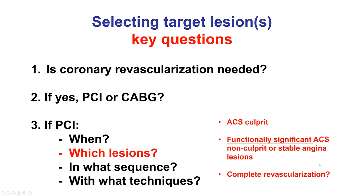In terms of complete versus incomplete revascularization, this issue has been resolved for ACS — specifically STEMI patients — given the COMPLETE trial. There is less convincing data for patients with non-ST elevation ACS and stable ischemic syndromes. In most cases, patients who undergo complete revascularization do have better outcomes, but this may reflect better baseline anatomy and comorbidities rather than the revascularization itself.